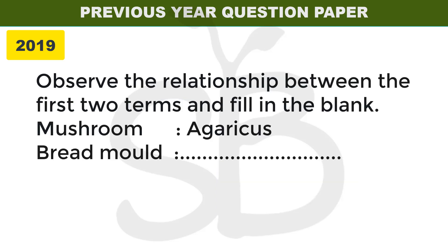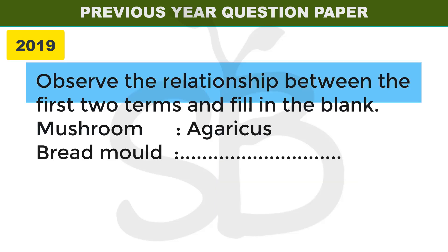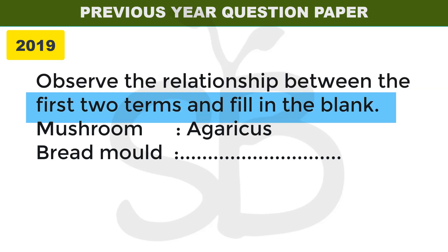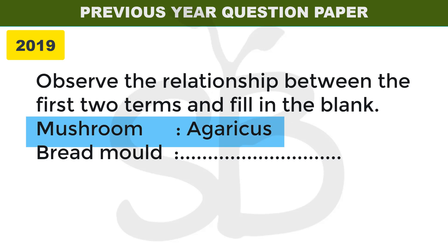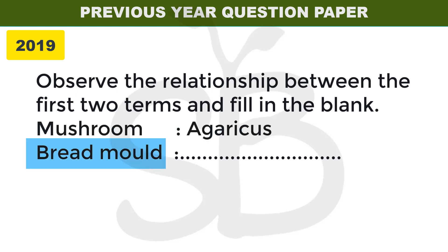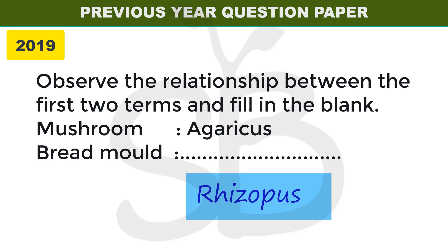In the 2019 annual exam: observe the relationship between the first two terms and fill in the blanks. Mushroom is to Agaricus as bread mold is to dash. The answer is: bread mold is Rhizopus, which belongs to Phycomycetes.